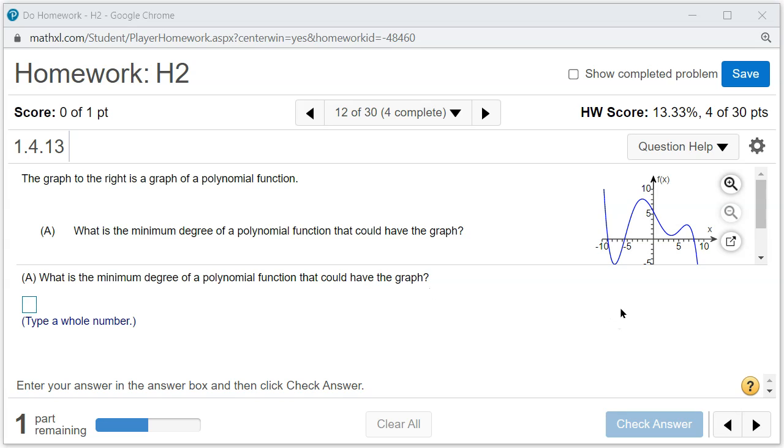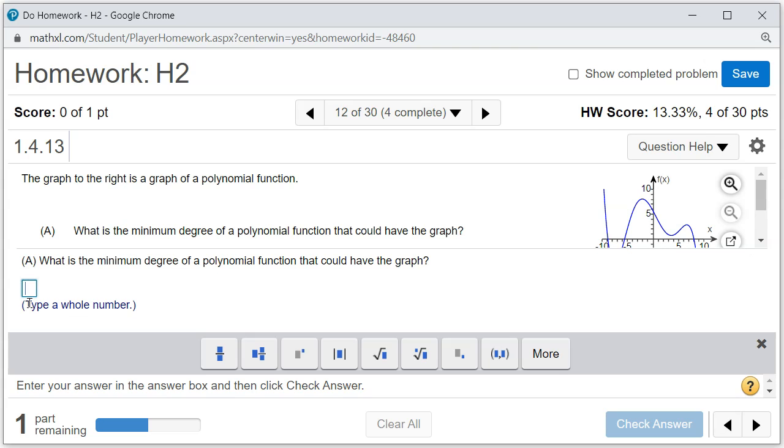So we're going to count the number of turning points. It turns once, one, two, three, four. So the degree has to be—you have to add one—so the degree has to be at least five. We're going to put five there.